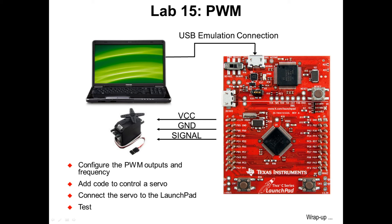In lab 15, we'll configure one of the PWM outputs to generate a suitable frequency to control a radio control servo. We'll then use the switches on the launch pad to change the duty cycle, or pulse width, of the control pulse. Note that in order to run this lab, you'll need to acquire and modify a servo.